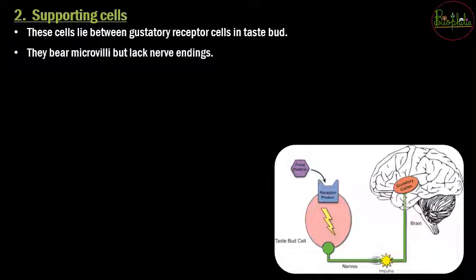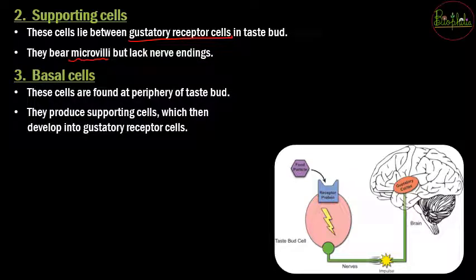Similar to olfactory cells, taste buds also have supporting cells and basal cells. Supporting cells lie between the gustatory receptor cells and have microvilli but no nerve endings. The basal cells are found at the periphery of the taste bud and produce supporting cells, which in turn develop into new gustatory receptor cells.